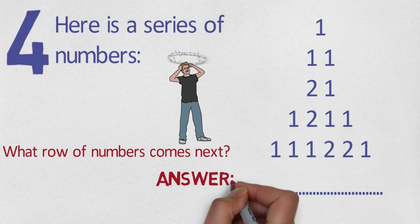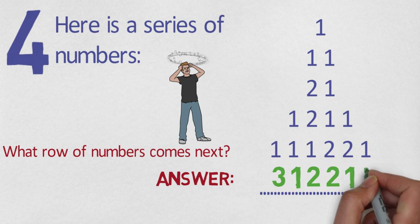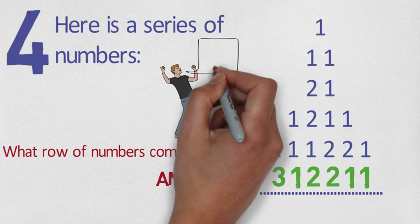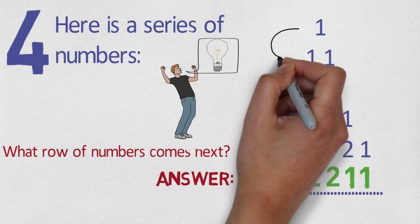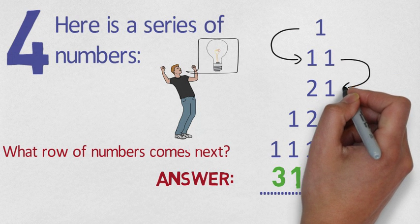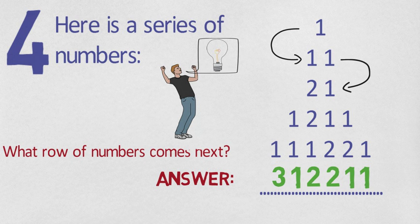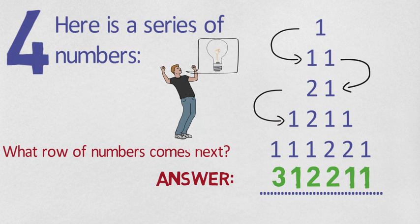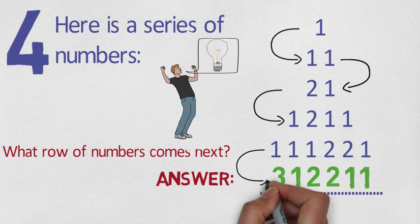The answer? 3 1 2 2 1 1. To understand this puzzle, you need to say the numbers out loud. The first line has 1 1, so the second line becomes double 1. Spoken aloud, the second line has two 1s, so the third line is 2 1. Spoken aloud, the third line has 1 2 and 1 1, which becomes the fourth line. And the final line has 3 1s, 2 2s and 1 1, which becomes the answer.